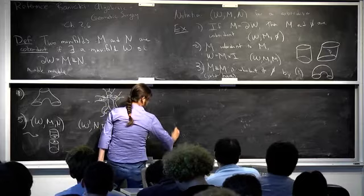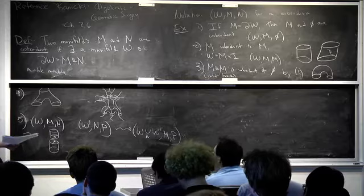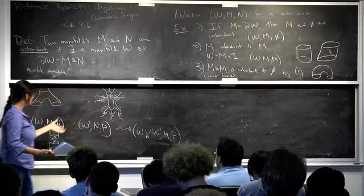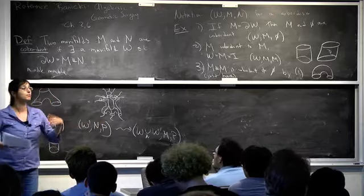In the 'mumble mumble' situation — with additional structure — you need the extra data to agree near N. When you do this, you don't just need the N's to be the same as manifolds; you need the N's to be the same as structured manifolds, and then you can glue them together properly. Whenever you have smooth structure, you need a little extra data: a collar neighborhood of the boundary, and the two collar neighborhoods glue together smoothly.